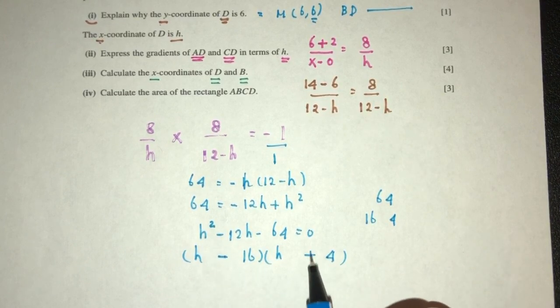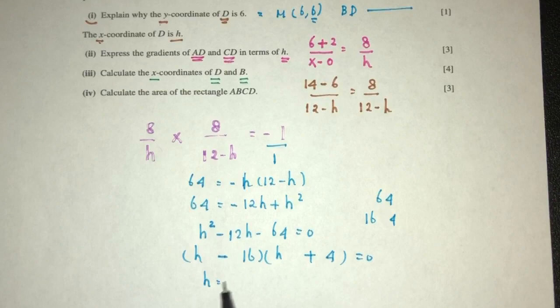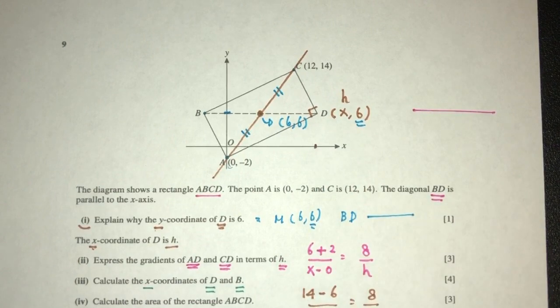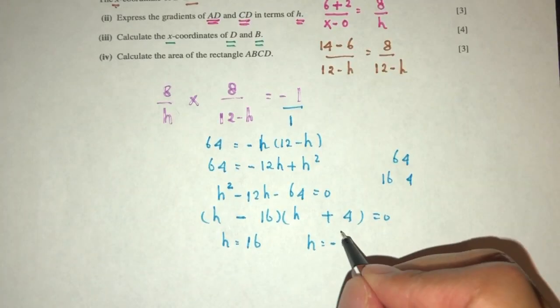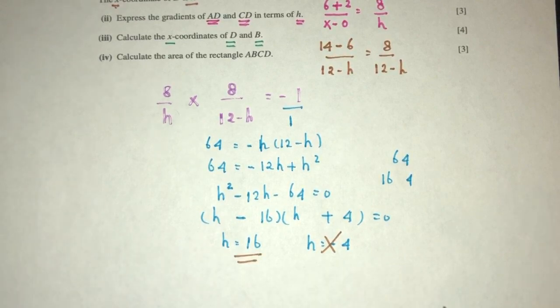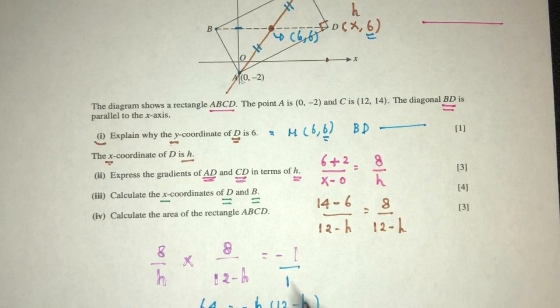To get minus 12, we have to have minus 16 plus 4. h can be 16 or h can be minus 4. But obviously, h is on the positive x-axis, so this cannot be the value. So h can only be 16. Now we have to find the x value for B as well.